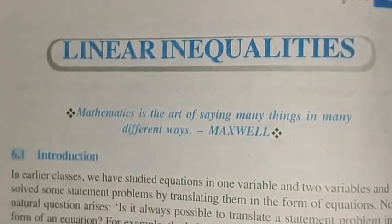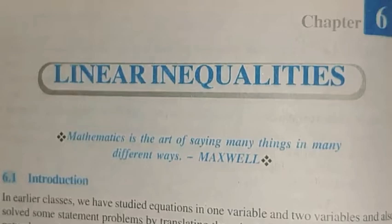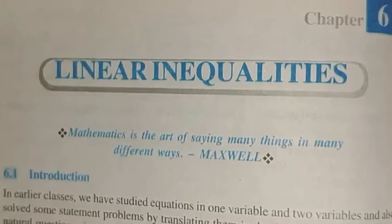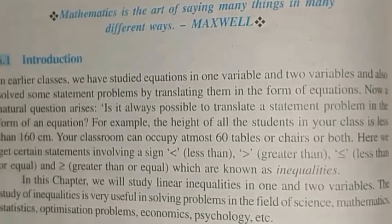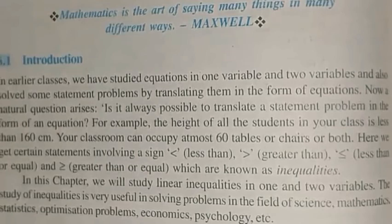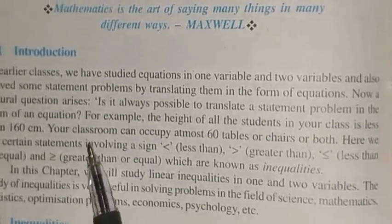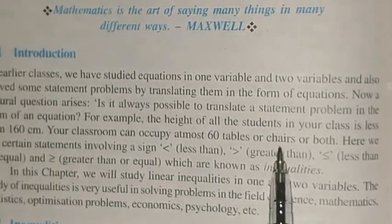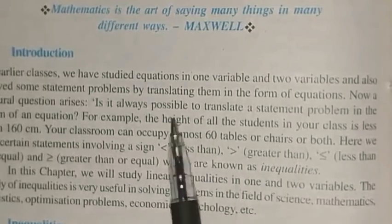Today we are going to start with chapter number 6, that is linear inequalities. You have studied a pair of linear equations in two variables in class 10. Now, what are inequalities? It is not always possible to express everything in terms of equations. Sometimes we are not sure that some expression or statement is equal to something. For example, the height of all students in your class is less than 160 centimeters, or your classroom can occupy at most 60 tables or chairs or both.